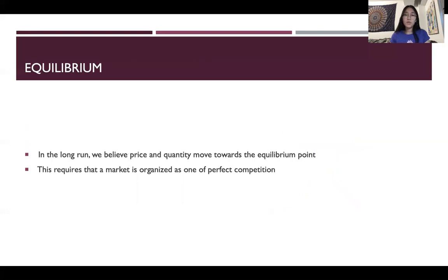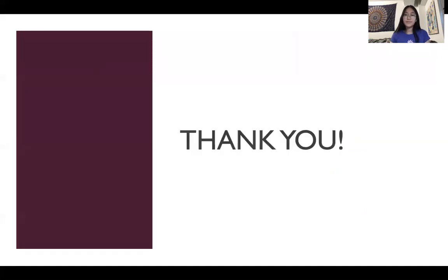In the long run, we believe that price and quantity will move towards the equilibrium point. So regardless of whether the price is relatively high or relatively low, we believe that it will move either down or up to reach equilibrium. For this to happen, we would require the market to be organized as one of perfect competition. That's all for this video — thank you guys for watching and hope you have a good day.